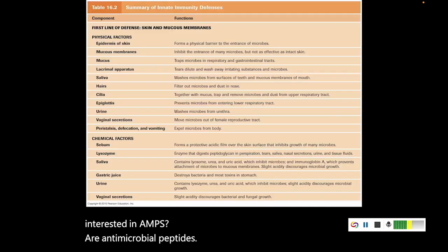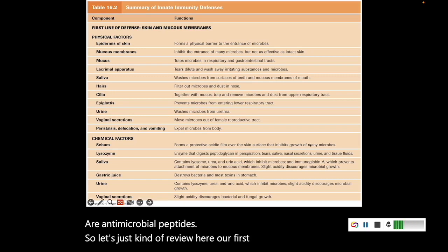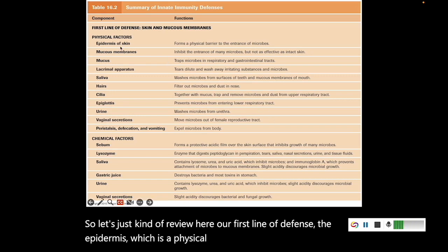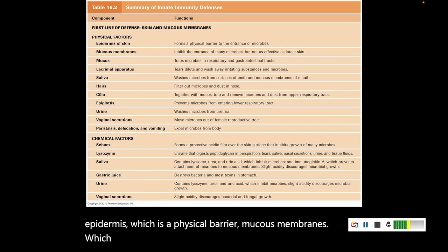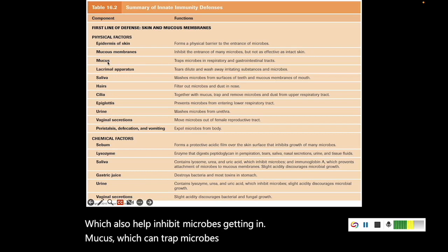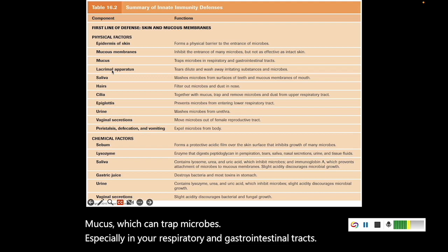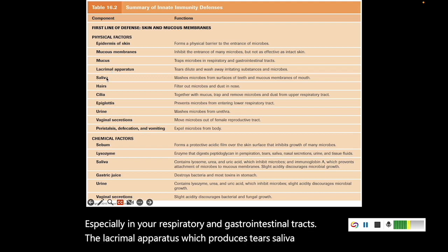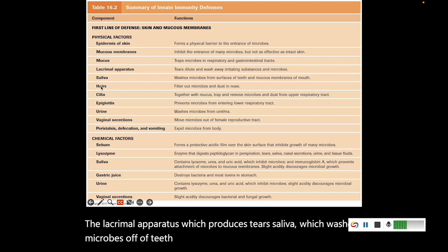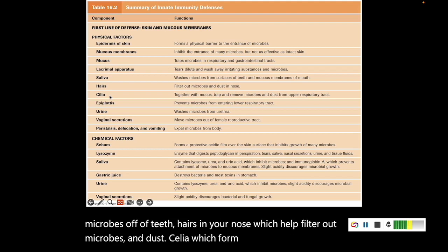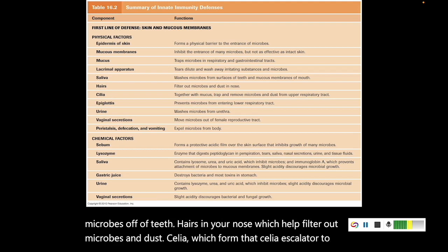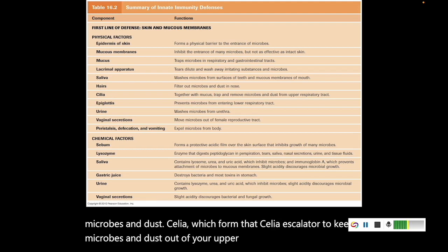Let's review our first line of defense. The epidermis is a physical barrier. Mucous membranes also help inhibit microbes from getting in. Mucus can trap microbes, especially in your respiratory and gastrointestinal tracts. The lacrimal apparatus produces tears. Saliva washes microbes off of teeth. Hairs in your nose help filter out microbes and dust. Cilia form that cilia escalator to keep microbes and dust out of your upper respiratory tract. The epiglottis helps stop microbes from getting into your lower respiratory tract.